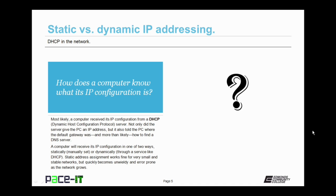A computer will receive its IP configuration in one of two ways: either statically, which means manually set, or dynamically, which means through a service like DHCP. Static IP address assignment works fine for very small and stable networks, but quickly becomes unwieldy and error prone as the network grows and more nodes come onto the network.